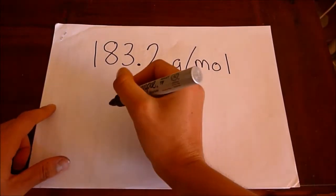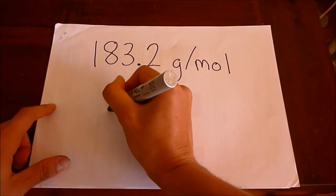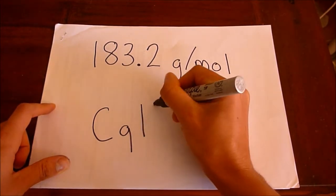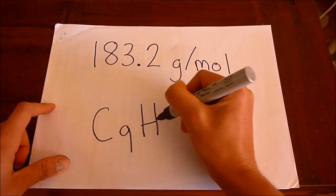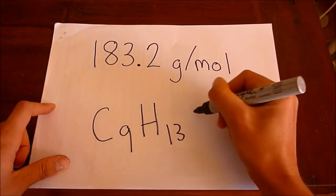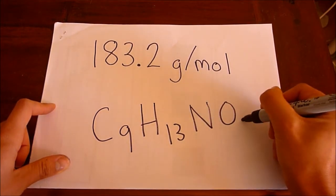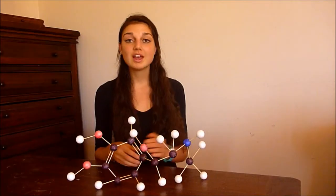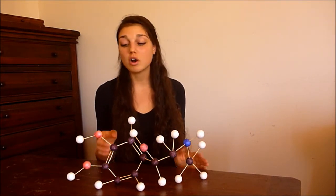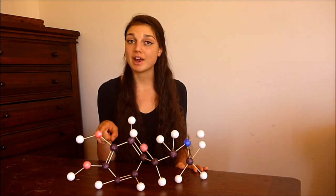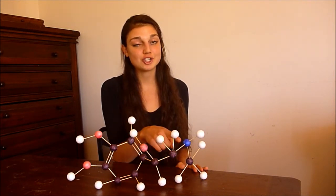Epinephrine has a molecular weight of 183.2 grams per mole, and consists of 9 carbons, 13 hydrogens, 1 nitrogen, and 3 oxygens. The molecular shape of epinephrine can be seen here, with all carbons being black, oxygen being red, hydrogen being white, and nitrogen being blue.